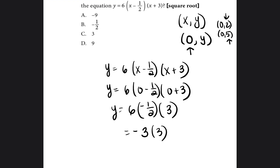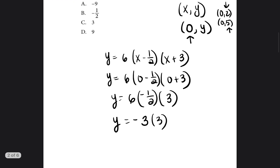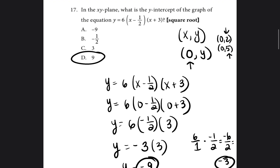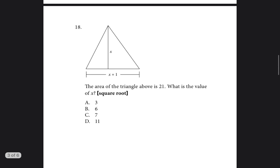If you're unsure, you can also multiply it out: 6 over 1 times negative 1 over 2, multiply the numerators to get negative 6 over 2, which is negative 3. Going back to our equation, y = negative 3 times 3, so y equals negative 9. Negative 9 is our y-intercept. The lesson here: any time you need to find the y-intercept and you're given an equation, just insert zero for x — it's much simpler than it seems.